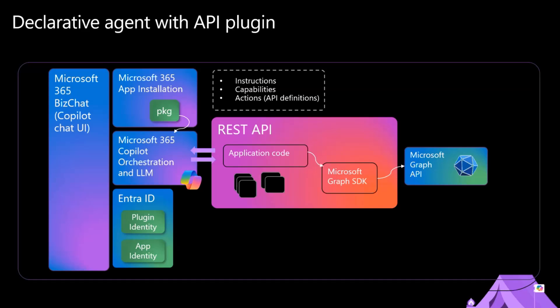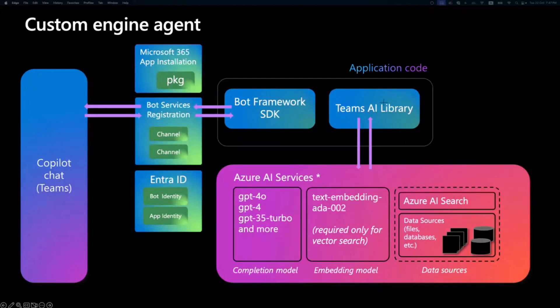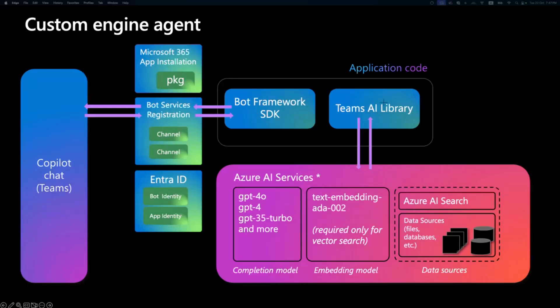Suppose you wanted to build a completely custom engine agent. Aicha pops in to show how. A brief intro about custom engine agents: some of you have already experimented with bots before, which were popular back in the days with Teams integrations. Today we're calling a new form of custom integrations in the chat environment custom engine agents. We're able to use custom engine agents in Teams, Outlook, and Microsoft 365 spaces.